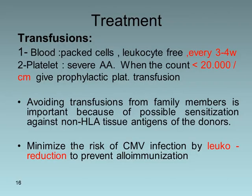Treatment: for supportive care, the patient requires transfusion, including blood that should be packed cells, leukocyte-free, given every 3 to 4 weeks. Platelet transfusion is needed when there is severe aplasia with a count less than 20,000 per cubic millimeter; prophylactic platelet transfusion should be given. It is very important to avoid transfusion from family members because of possible sensitization against non-HLA tissue antigens of the donors, and to minimize the risk of CMV infection through leukoreduction to prevent alloimmunization.